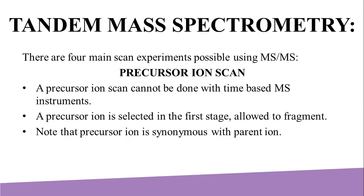There are four main scan experiments possible using MS-MS. The first is precursor ion scan, which cannot be done with time-based MS instruments. Note that precursor ion is synonymous with parent ion, and product ion with daughter ion; however, the use of these anthropomorphic terms is discouraged. A precursor ion is selected in the first stage and allowed to fragment; then all resultant masses are scanned in the second mass analyzer and detected.